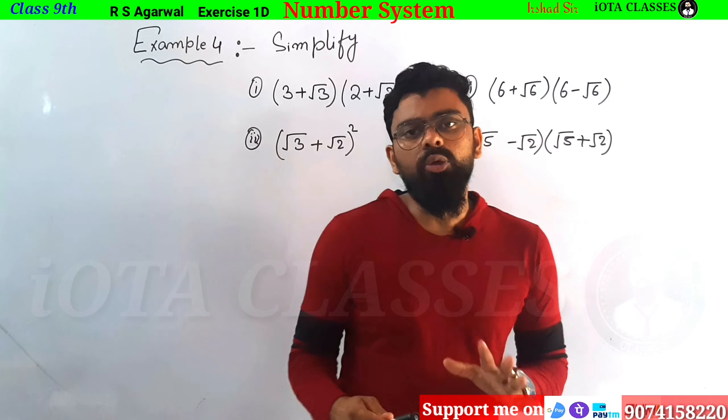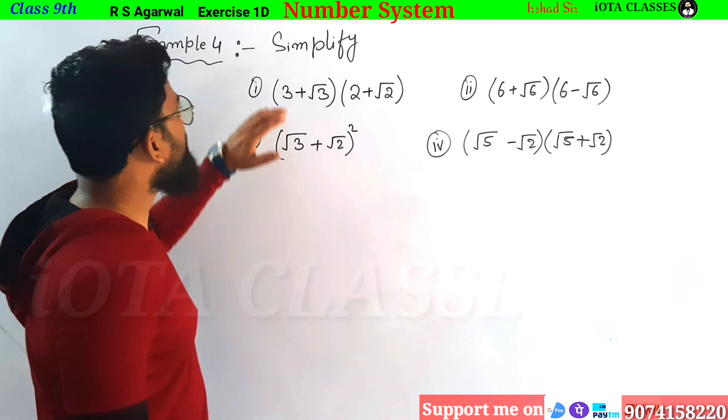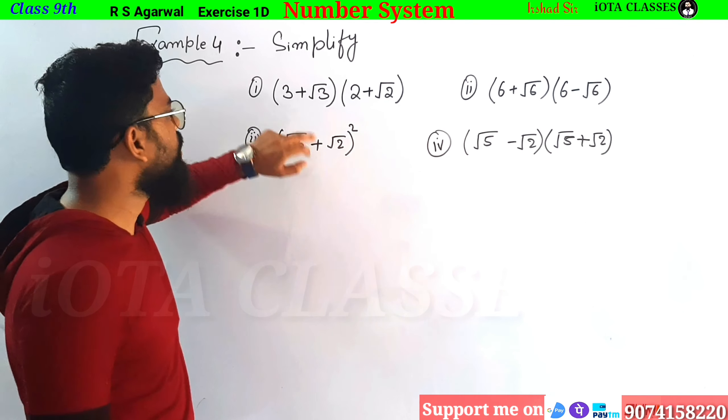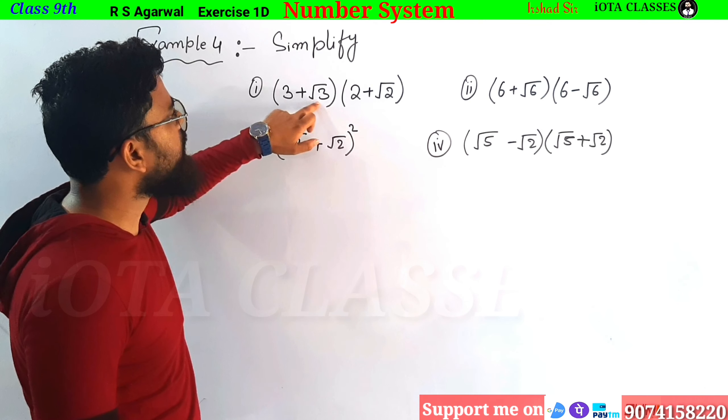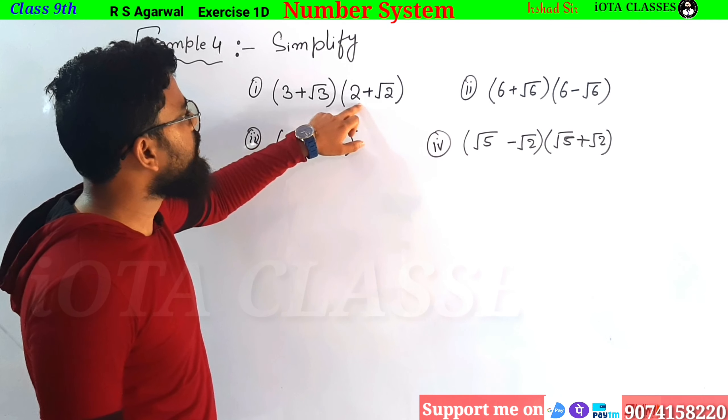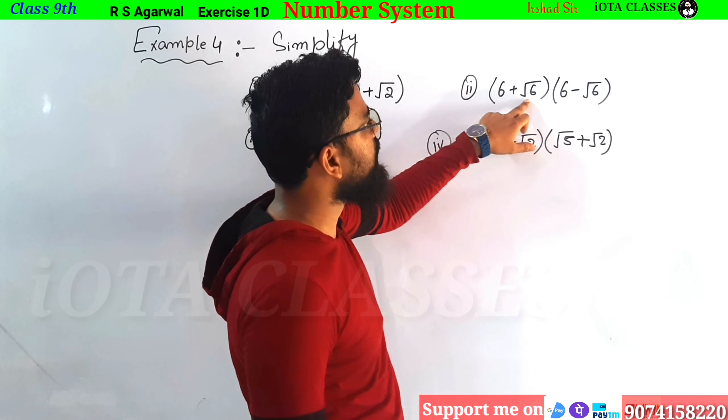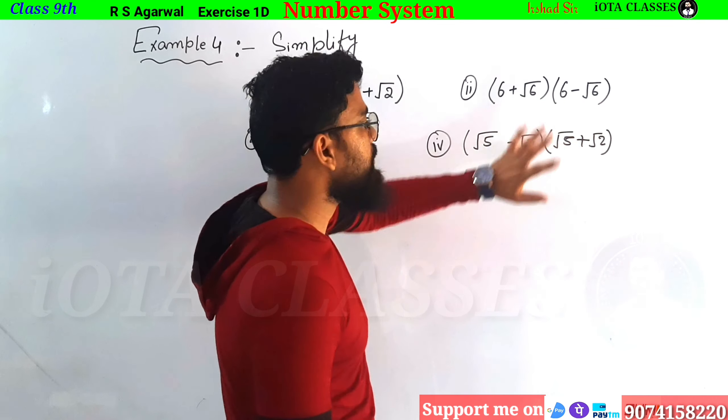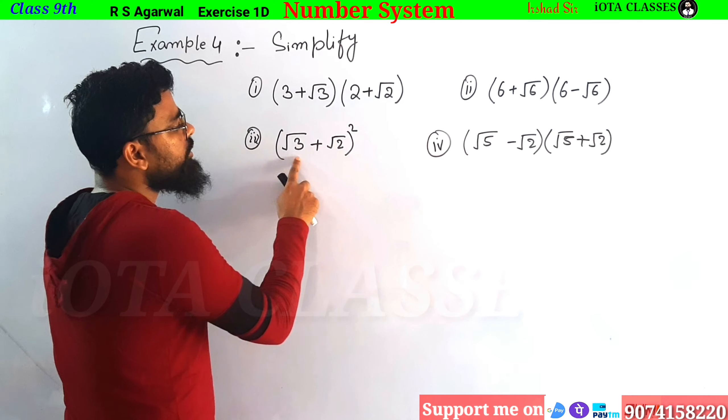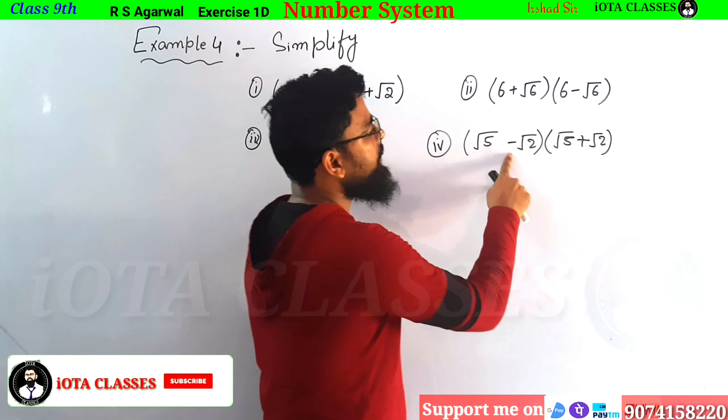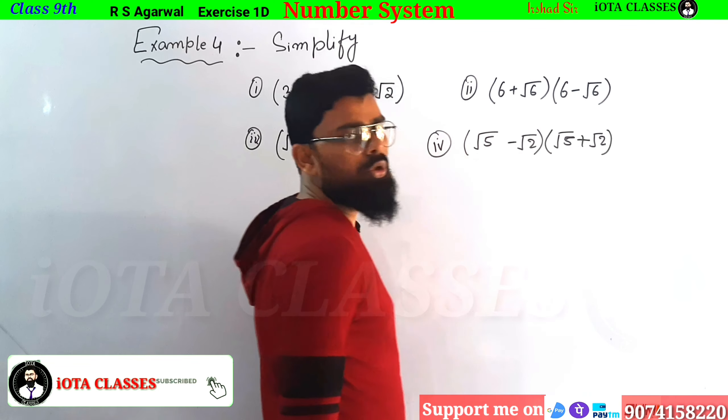In example number four, there are four questions. So what is the first question? We have to simplify it. The first question is 3 plus root 3 times 2 plus root 2. The second question is 6 plus root 6 and 6 minus root 6. What is the third? It is root 3 plus root 2.